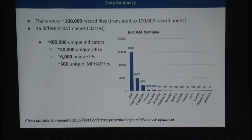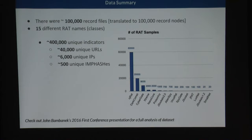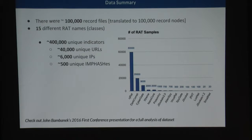A quick summary of the data: there were 100,000 record files translated inside the graph database as record nodes. There were 15 different RAT types — overwhelmingly 60,000 records about NJRat, 20,000 about Dark Comet, and around 9,000 about Cybergate. There were also around 400,000 unique indicators in the dataset: 40,000 URLs, 6,000 IPs, and 500 imp hashes.